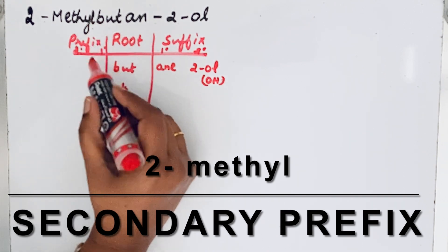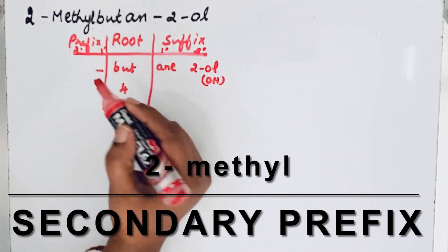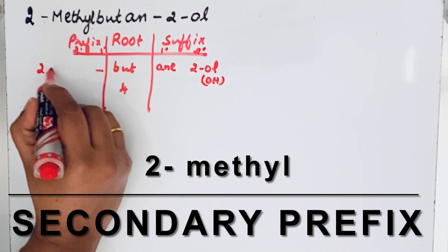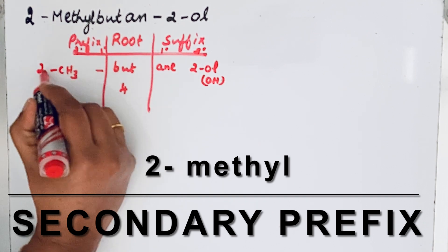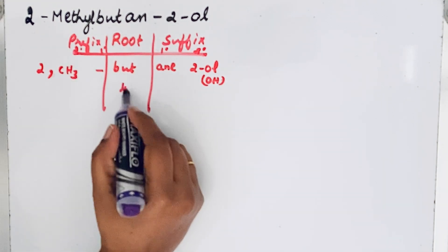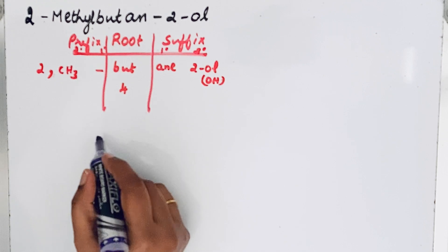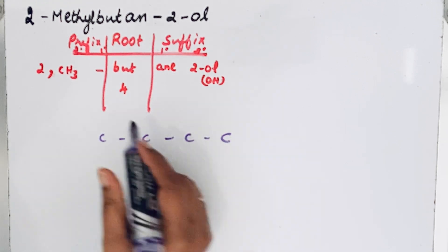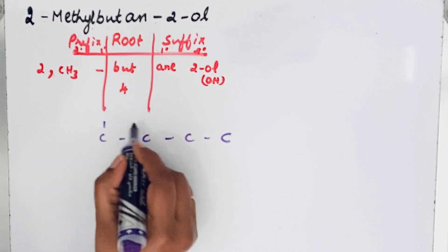So the primary prefix is absent. The secondary prefix is 2-methyl, CH3 group in the second position. Butane, which contains four carbon atoms. First, let us give numbering: 1, 2, 3, 4.